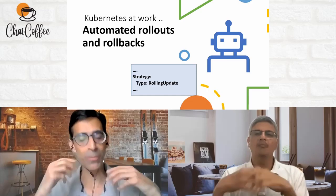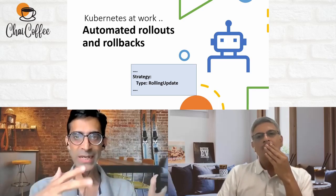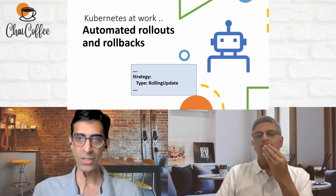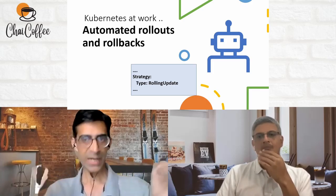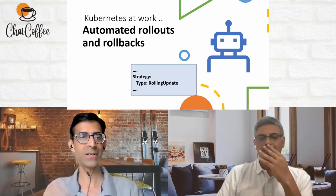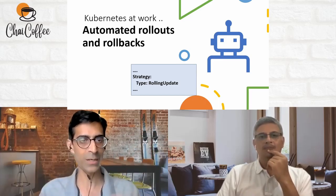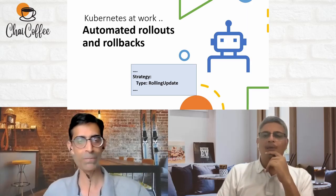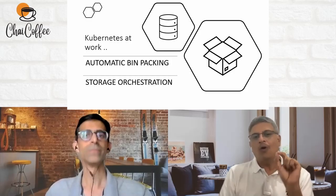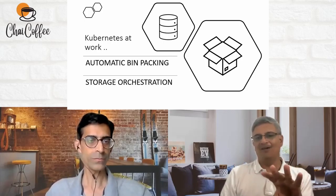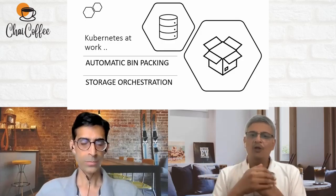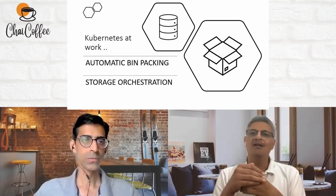That addresses one challenge, but with hundreds of microservices deployed across nodes — with only a limited number of bare metal machines, VMware machines, or EC2 instances — how do you ensure pods don't start killing each other? This is where automatic bin packing comes in. Nodes have fixed memory and compute limits, so Kubernetes manages at the pod level instead, where you can specify minimum and maximum memory or compute for each pod.